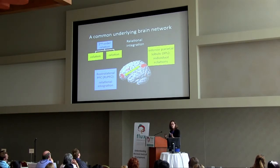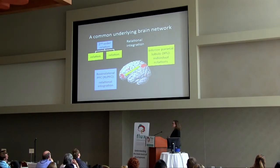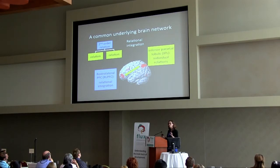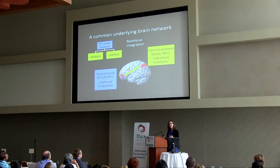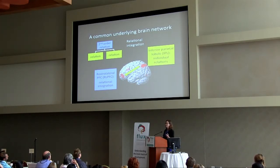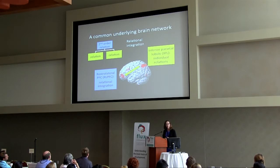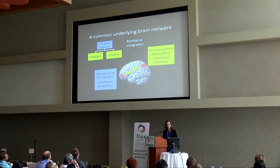Some of our studies have tried to tease these relationships apart. We think the inferior parietal lobule is actually representing individual relationships — its activity scales with the number of relations you have to consider — but it's strongly interconnected functionally with the rostrolateral prefrontal cortex in humans, not in macaques, which I think tells us something potentially interesting about the evolution of human thought. We believe rostrolateral prefrontal cortex is really important for putting together these relations.